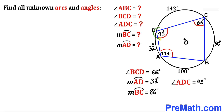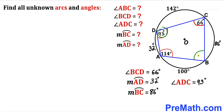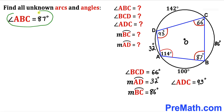The sum of opposite angles in a cyclic quadrilateral must equal 180 degrees. Since angle ADC is 93 degrees, the opposite angle ABC has to be 87 degrees. So angle ABC turns out to be 87 degrees.